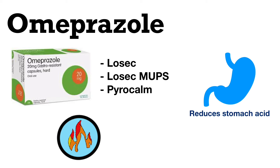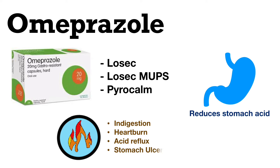In your stomach, you have proton pumps — enzymes that line the stomach and make acid to digest food — and omeprazole limits that. That's why it's called a proton pump inhibitor. It's useful because it treats things like indigestion, heartburn, and acid reflux. In certain cases, it is also used to prevent and treat stomach ulcers.